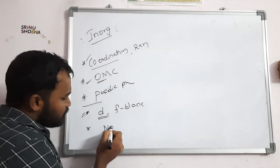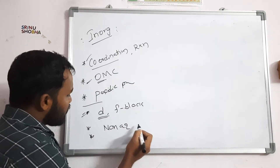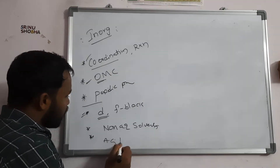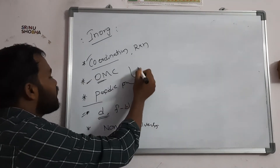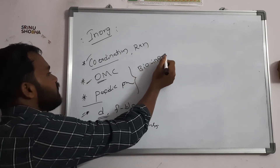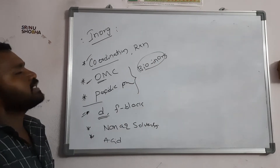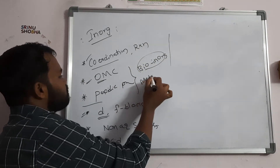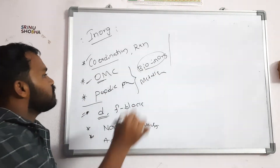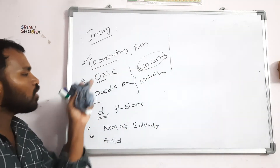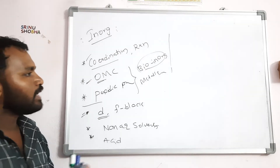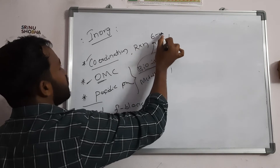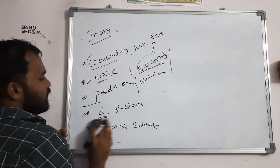Also focus on non-aqueous solvents, acid-base, and bio-inorganic. Bio-inorganic is a core area for CSIR — you will get either 6 to 10 marks from bio-inorganic. Prepare metalloenzymes as well. Focus on coordination, OMC, and bio-inorganic compulsorily. This is the overview of inorganic.